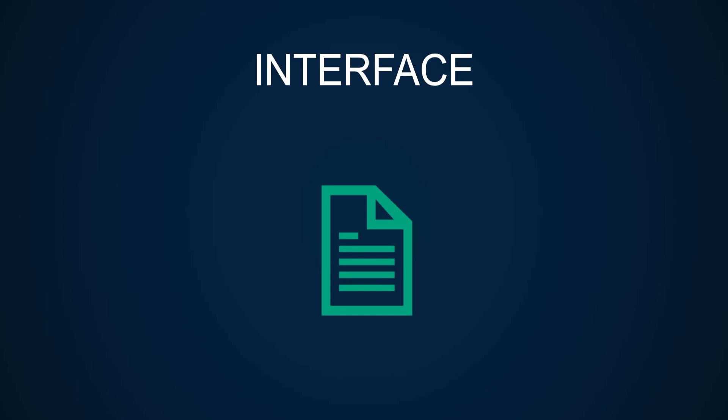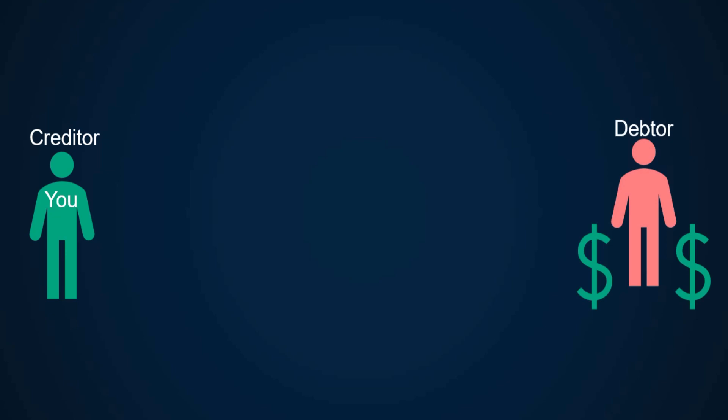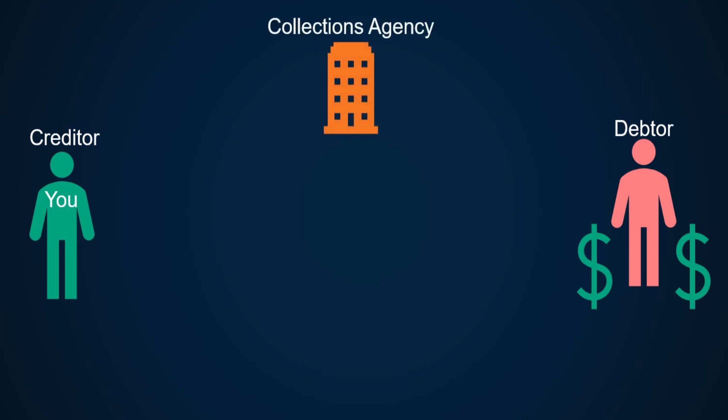An interface is like a contract that defines all the necessary actions or methods that an object must have. Let's look at the interface using a non-technical example first. Let's say that someone owes you money and you want to collect that debt. Your first step would be to try and collect that debt yourself, but if you're unsuccessful, you will probably hire a collections agency or some kind of company who would collect that debt for you for some kind of fee or commission.